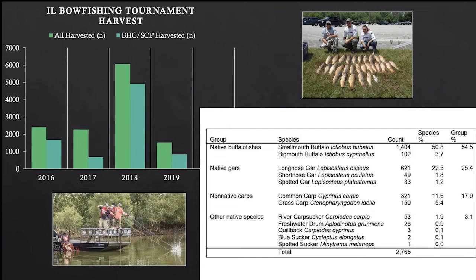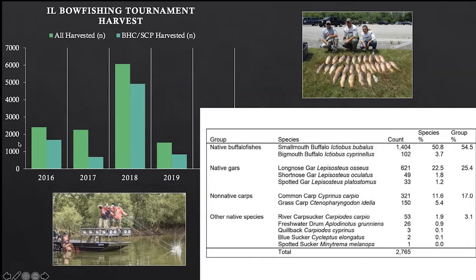In 2015, the Illinois Department of Natural Resources passed a rule requiring any group hosting a competitive fishing tournament to apply for a free permit and self-report data about what was weighed in and caught. We utilized that data to assess what species and how many fish were being harvested at bow fishing tournaments specifically. While there weren't a large number of tournaments — about 15 per year statewide — one real interesting pattern emerged in the bar chart showing fish harvested by those tournaments.